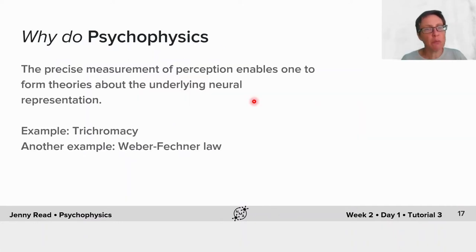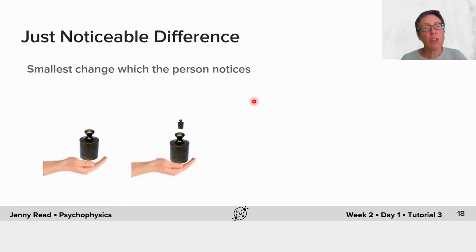Another great example is the Weber-Fechner law. To explain this, I need the idea of just noticeable difference. Suppose you're holding a weight and then I add a small increment to it. The just noticeable difference is the smallest weight that I can add that you would just notice an increase in heaviness.